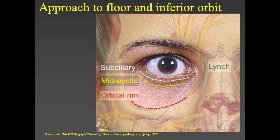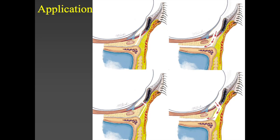When approaching the floor and inferior part of the orbit, you can choose a subtarsal incision, mid-eyelid incision, or the less popular orbital rim incision. However, the transconjunctival approach is most popular and can be done via a post-septal approach, where you land quickly onto the floor just within the orbital rim. Alternatively, the pre-septal approach is slightly more complex, takes longer, and does disrupt the septum, which can potentially cause lower eyelid retraction.